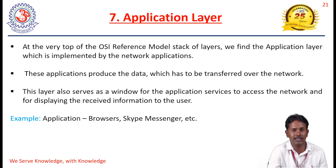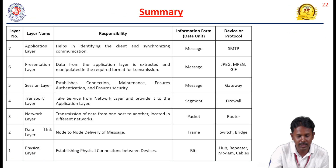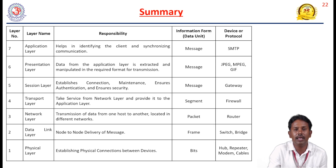Through these seven layers, this is the summary of the OSI reference model. In the physical layer, the devices used are hub, repeater, modem, and cables. In the data link layer: switch and bridges. In the network layer: router. In the transport layer: firewall. In the session layer: gateway. In the presentation layer: JPEG and MPEG formats. In the application layer, the protocols used are SMTP, File Transfer Protocol, and FTP.